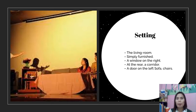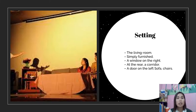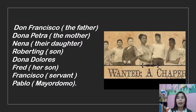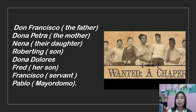The drama is set at the living room of Don Francisco's house on a Sunday morning at 11 a.m. The characters of 'Wanted a Chaperone' include: Don Francisco, the father; Doña Petra, the mother; Roberting, their son; Nena, their daughter; Doña Dolores, a neighbor; Fred, the son of Doña Dolores; Francisco, the servant; and Pablo, also known as Paul, the mayordomo or head of the servants.